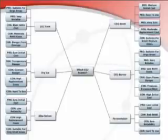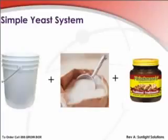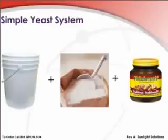In the spirit of education, I am going to run through some simple and more complicated CO2 systems in the next few slides. Yeast produces CO2 as it digests sugars, and an easy system can be made to produce CO2 for your garden. The main drawback with this system is that it is relatively short lived, takes more regular maintenance, and does not produce high enough CO2 to sustain a large scale garden.